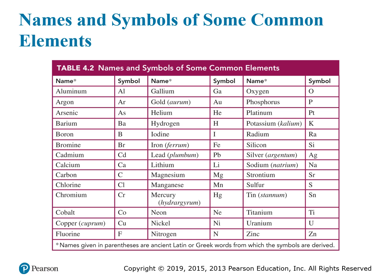Sometimes, if there is a conflict, they'll change the second letter to something else. For instance, both argon and arsenic begin with Ar, but they can't both have the symbol Ar. So argon got there first and has the symbol Ar, and arsenic is changed to As.